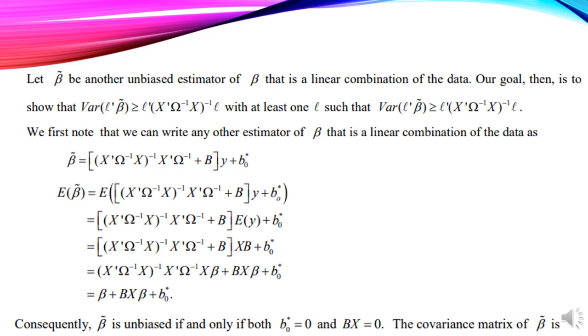The variance of L'beta hat equals L'(X'Ω⁻¹X)⁻¹L. We have beta hat given by the GLS formula, with B'B inverse terms expanding in terms of X and Ω⁻¹.